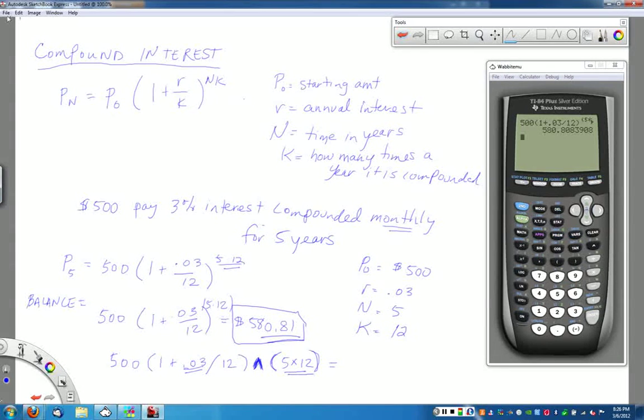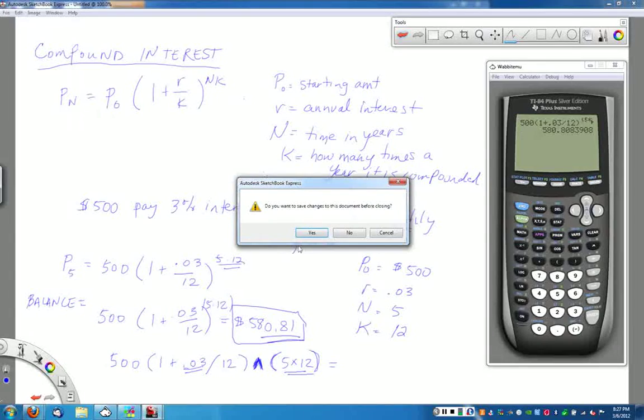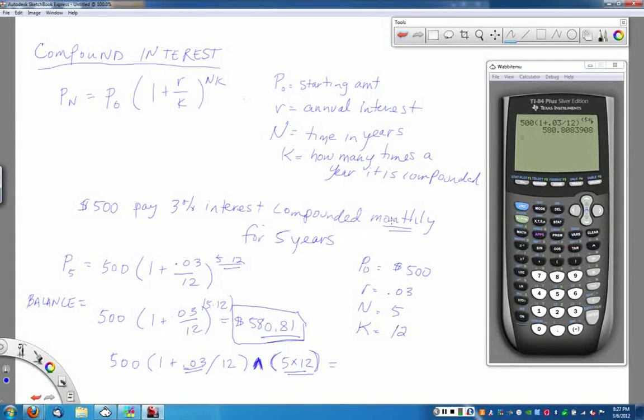Let's try another problem. Keep in mind that in this problem, I was compounding monthly, which meant that my k value was 12. They're not always going to do that. So let's do a slight variation on this problem.